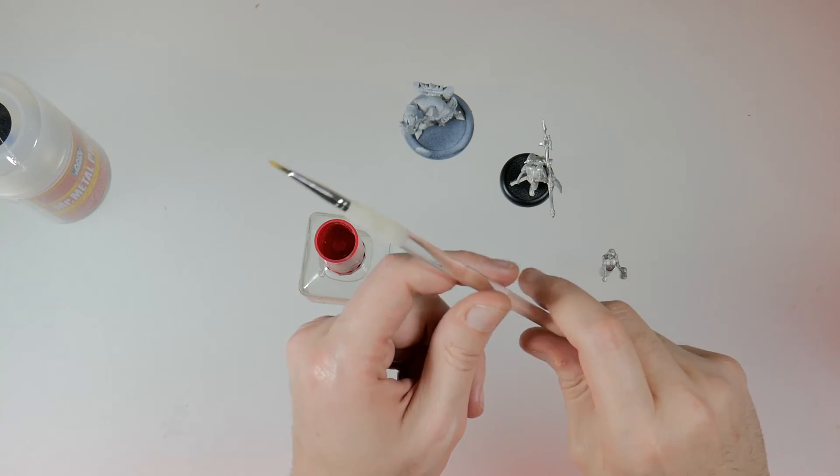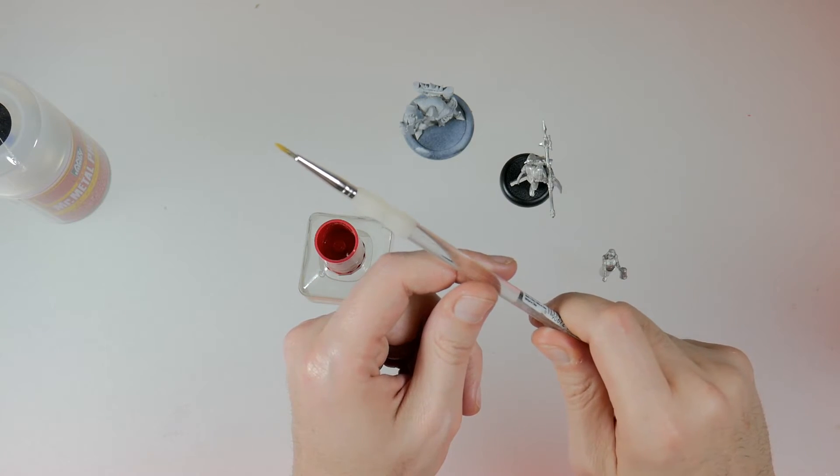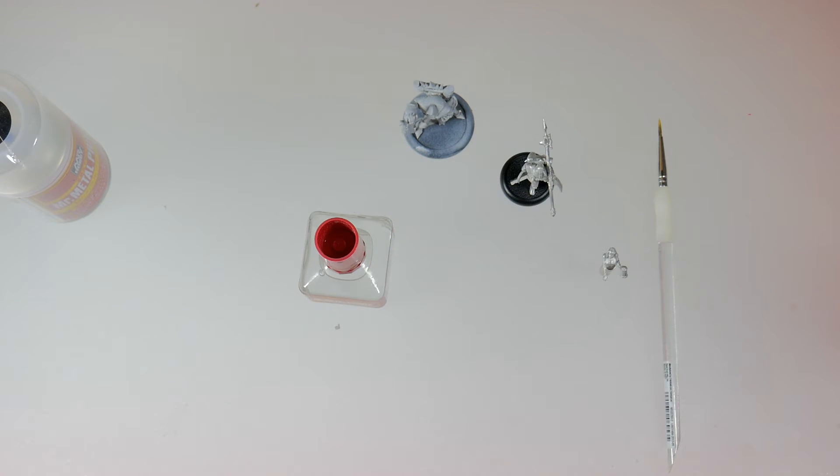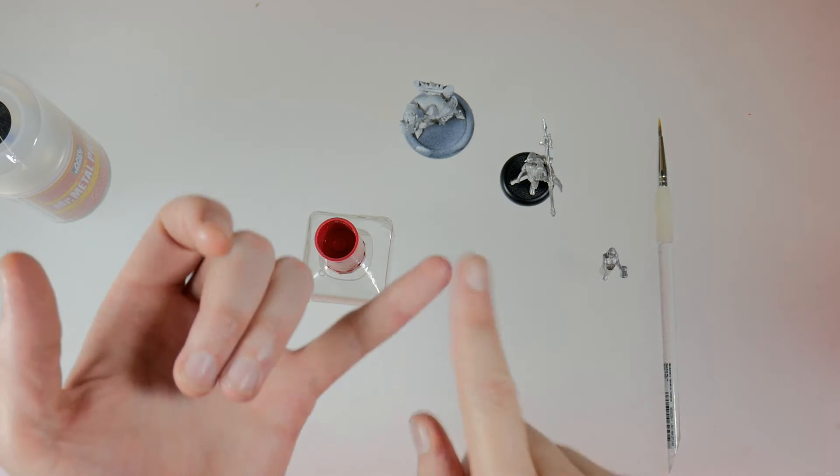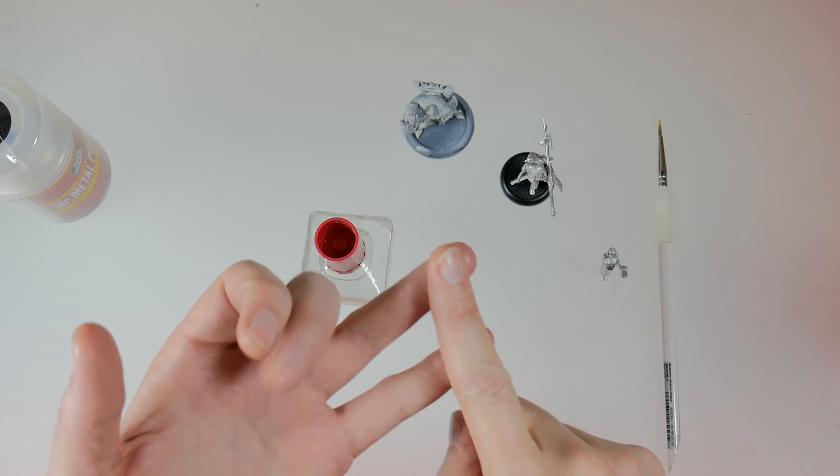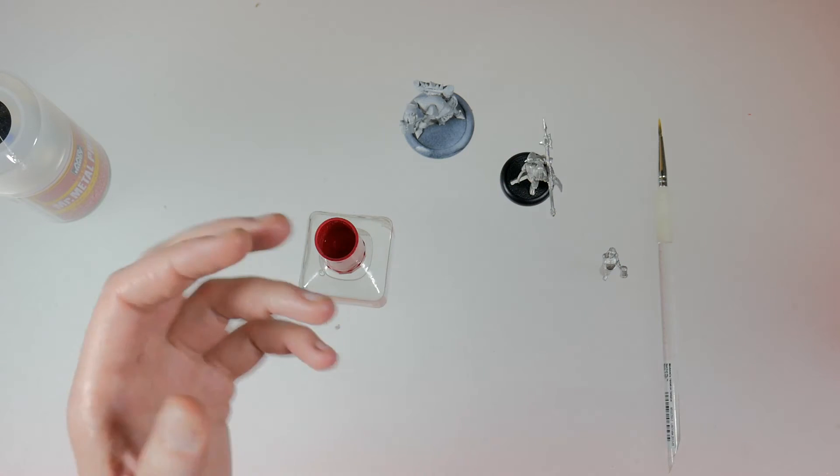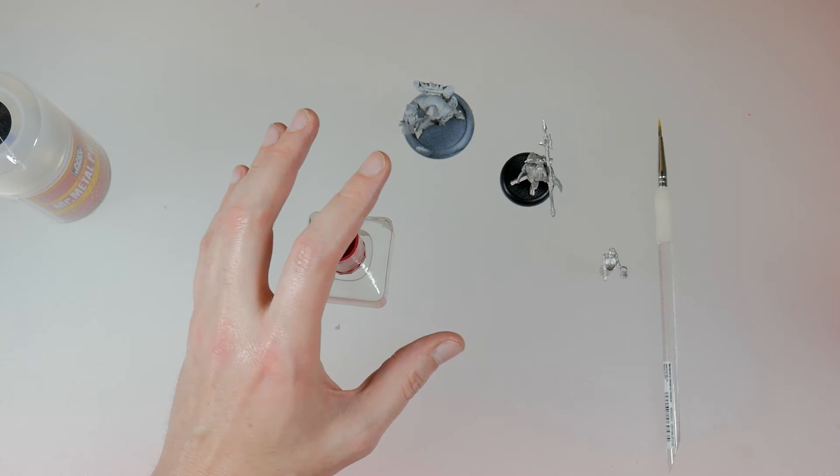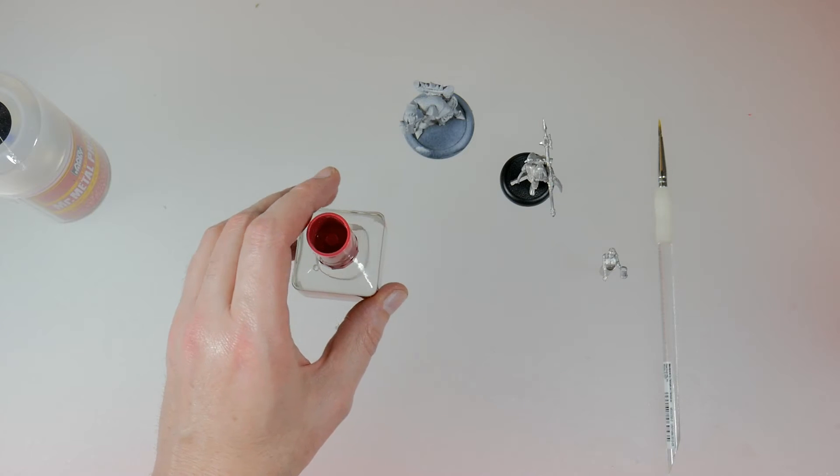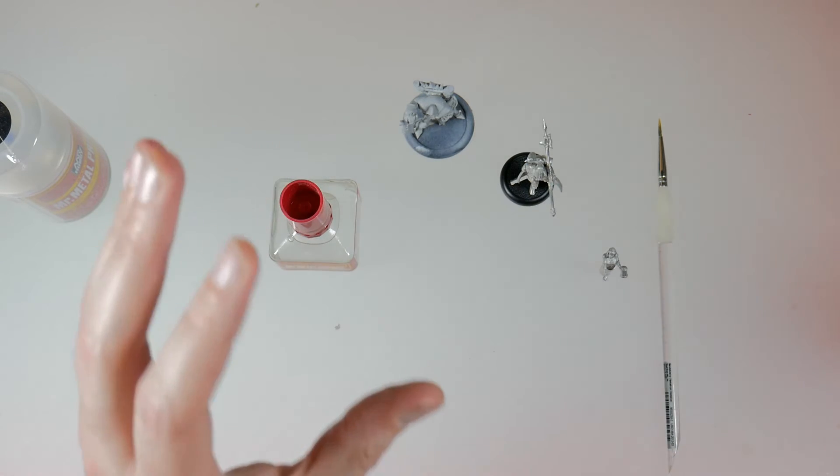Like I said once you're all done just wash out your brush in a lacquer thinner, easy peasy cleanup on that, nothing to worry about. I hope this helped you out. Like I said this can be used on brass, it can be used on tin, it can be used on aluminum, it can be used on pewter, it can be used on lead, it can be used on any type of metal.